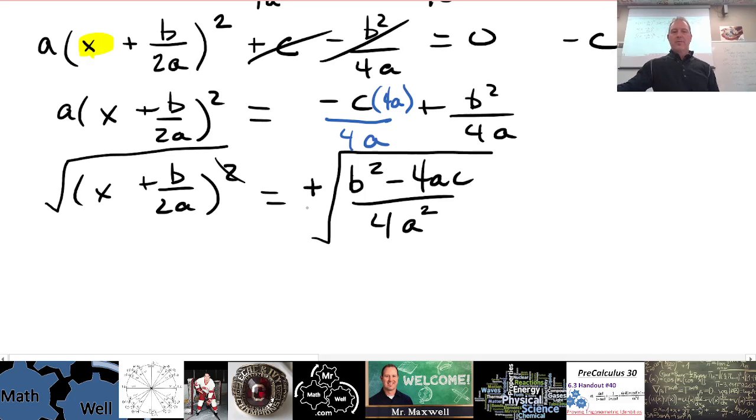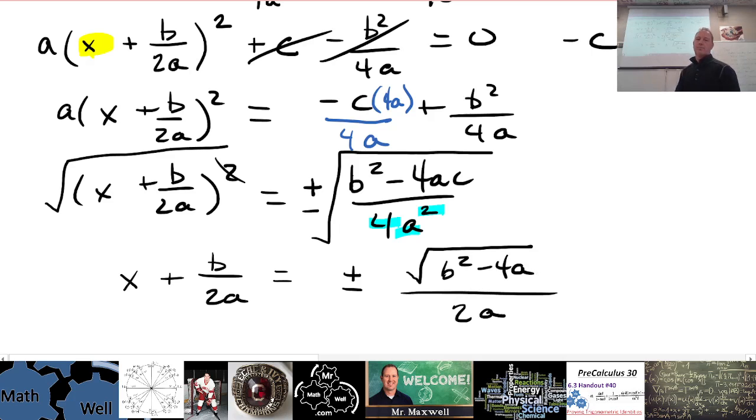And that's going to be a plus or minus, of course, too. So I'm left with x plus b over 2a equals plus or minus. Now as I simplify this, I want to highlight something here. This 4a squared, that's a perfect square on the bottom, so I'm going to say this is plus or minus, and I'm going to simplify the bottom and just leave this square root on top. So it's going to be the square root of b squared minus 4ac. I can't simplify that, but I'm going to write this as just 2a.